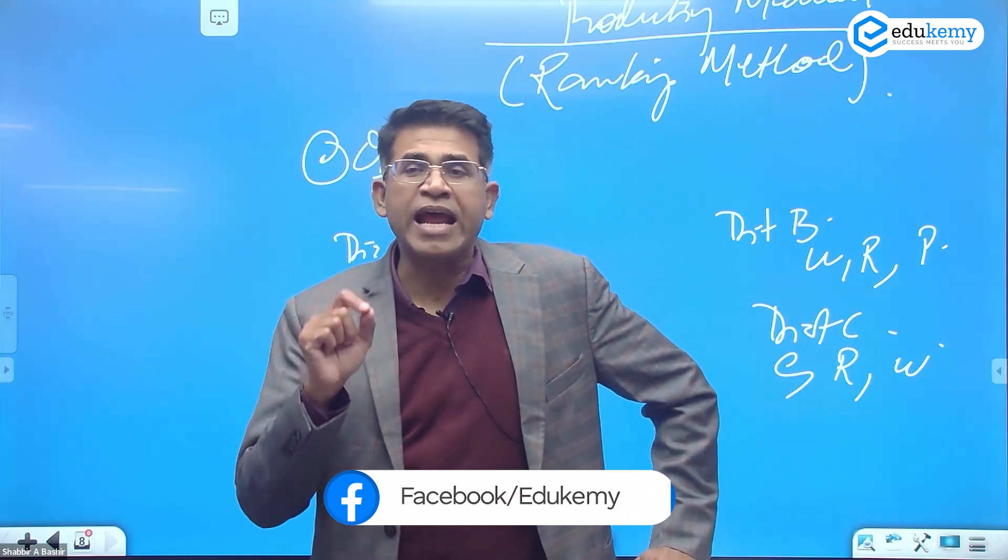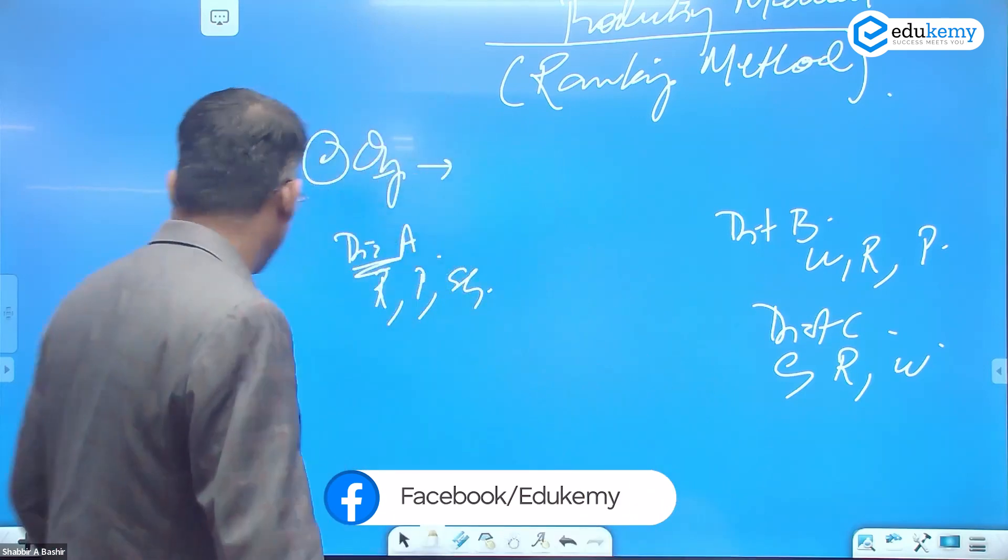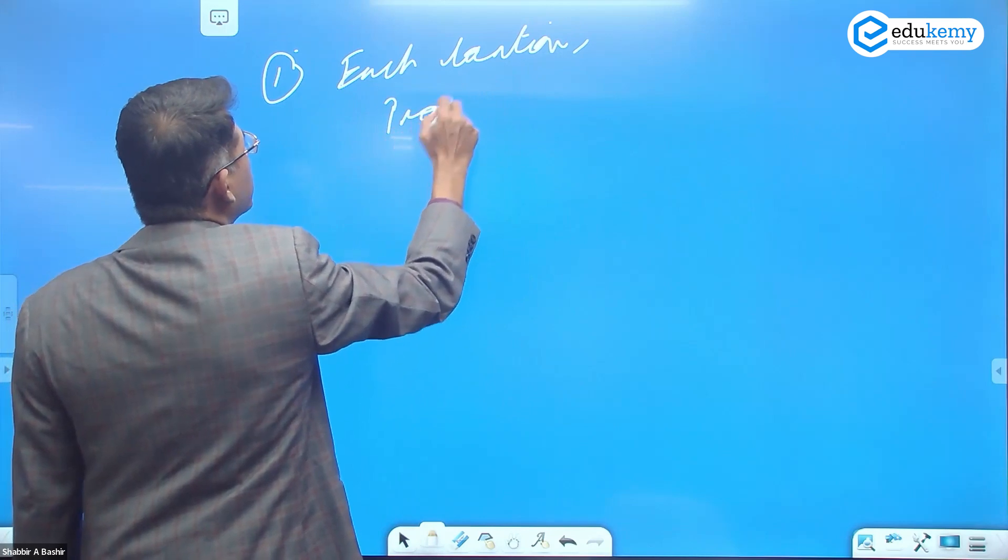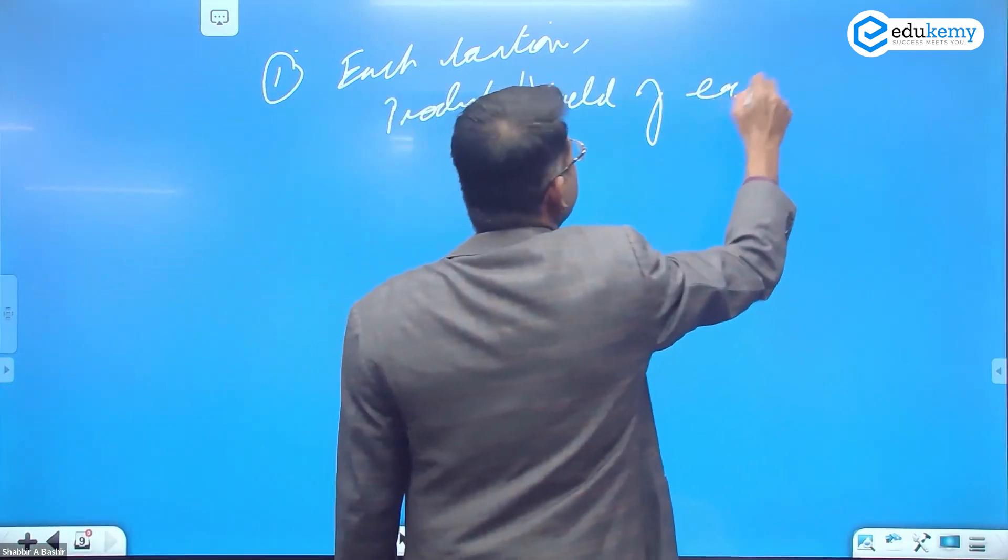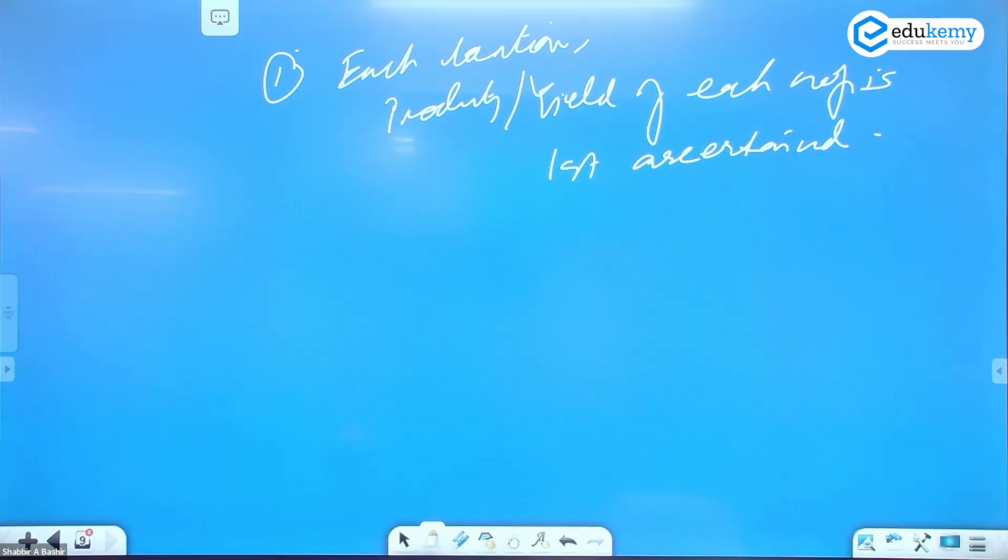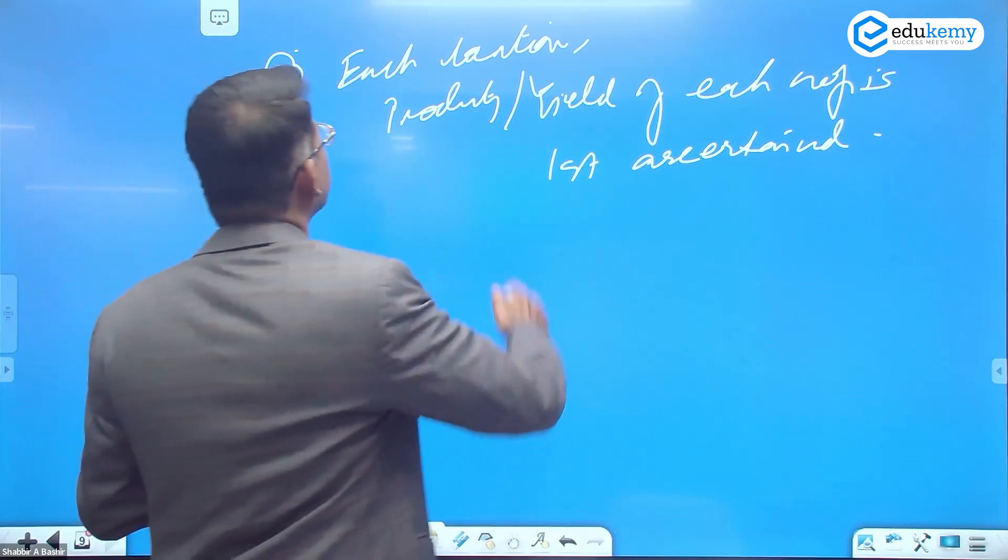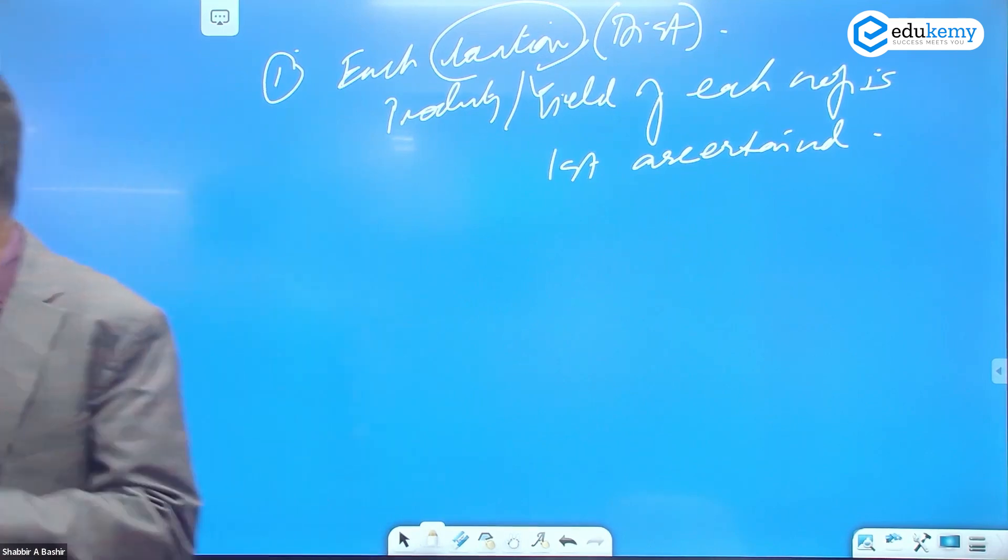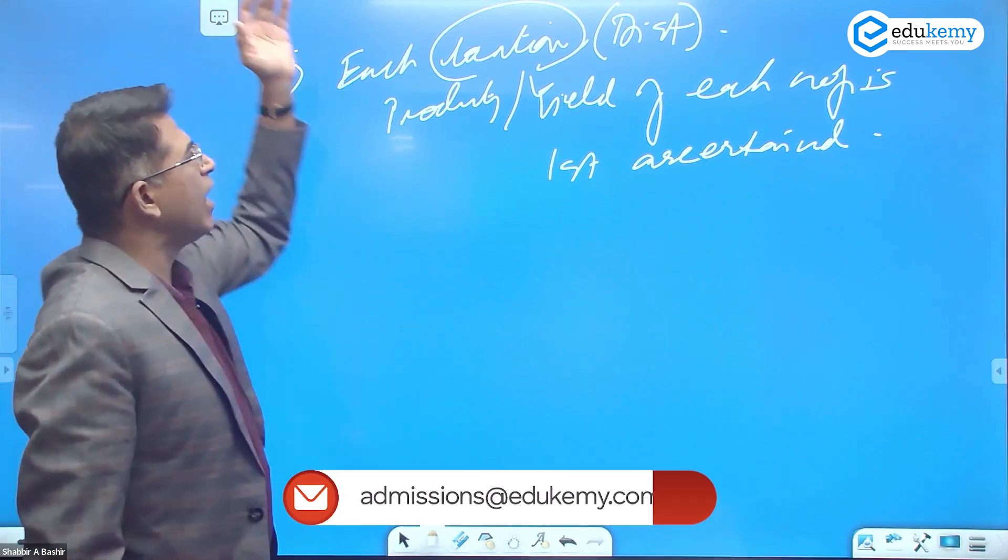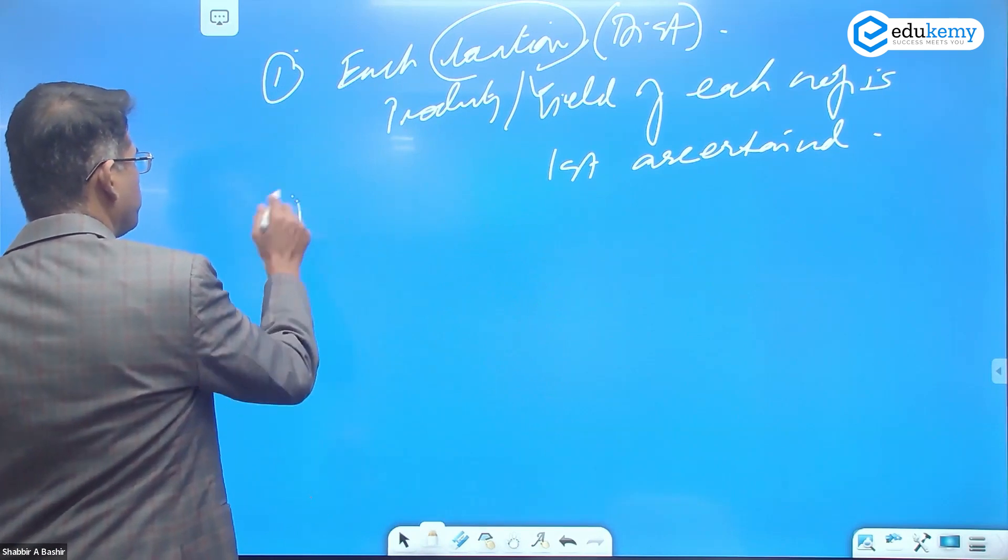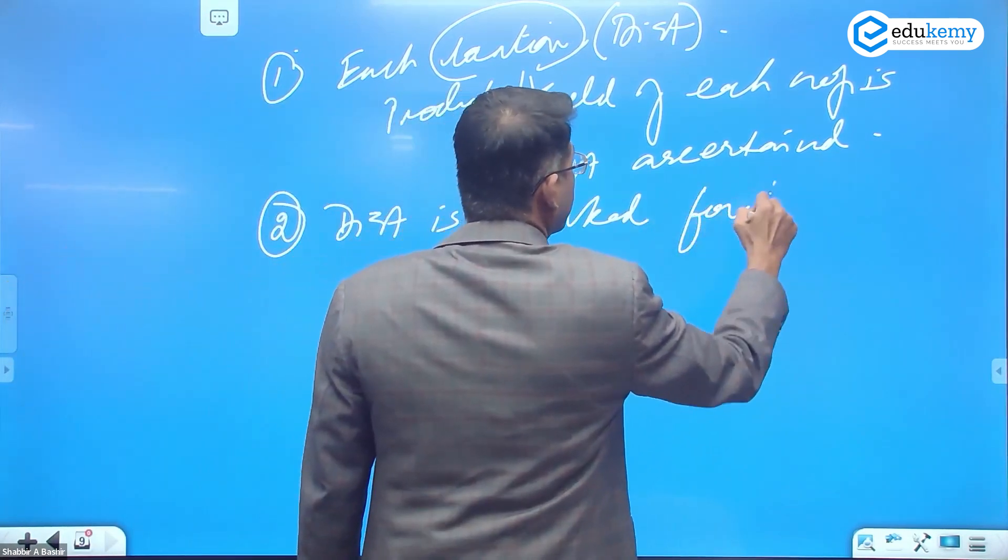Here we use Kendall's ranking method. It's a very simple method. For each location, the productivity or yield for each crop is first ascertained. Generally we do this comparison at the level of districts. For most agricultural studies, the unit of study is districts, but it can vary. For each location, the productivity or yield of each crop is first ascertained.